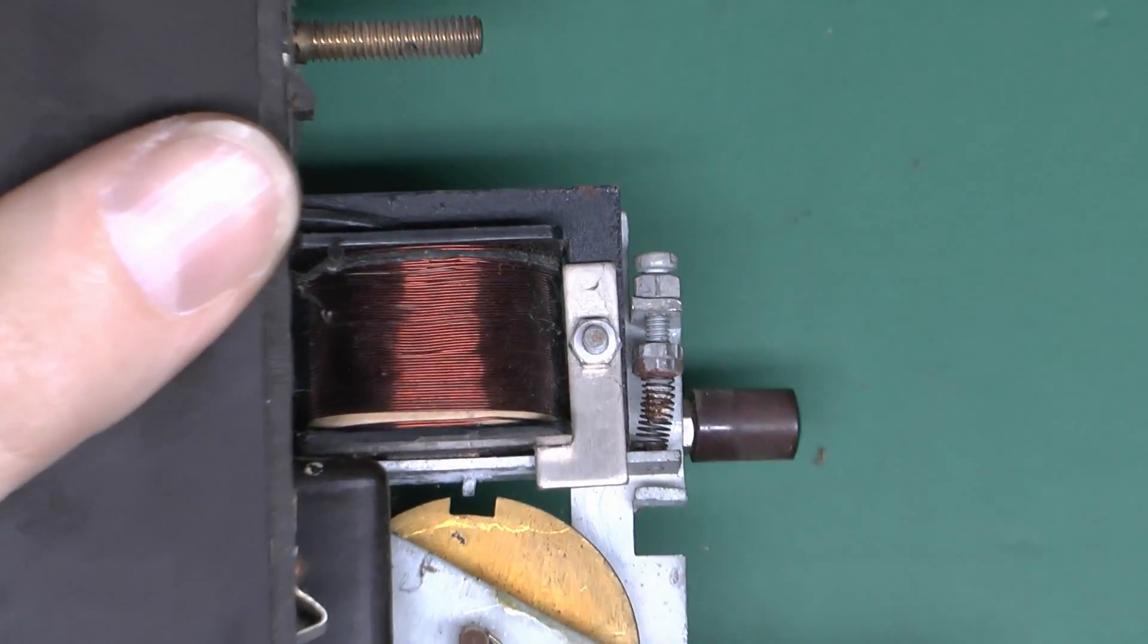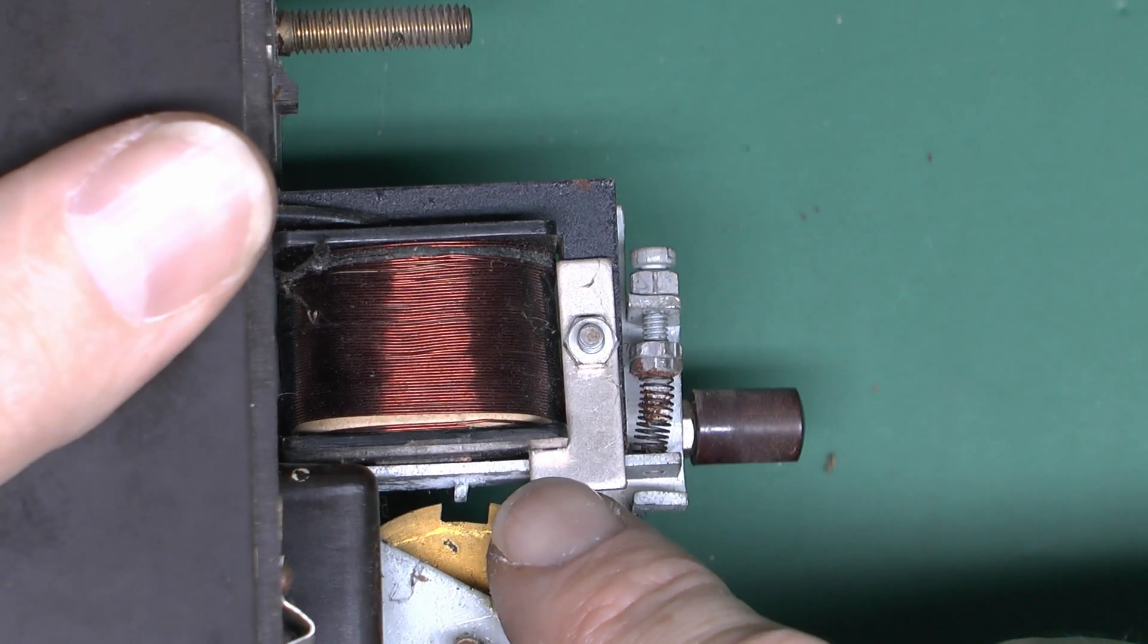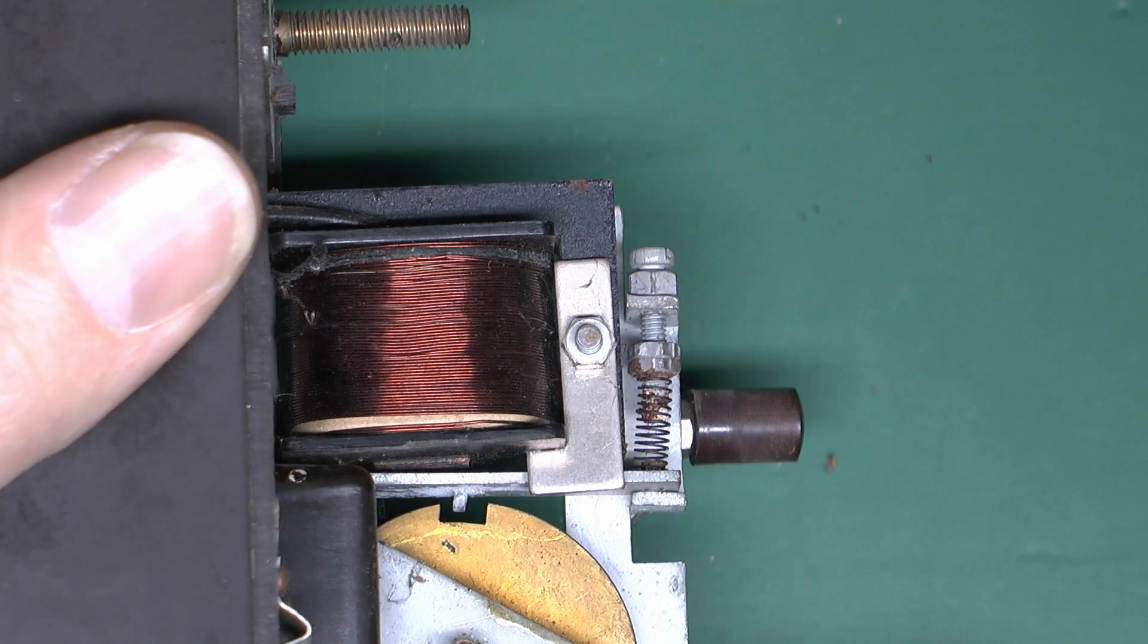We can see the tripping bar there is still in the attractive position here. If we turn off the power supply there, see it will just drop down and just go back into position.